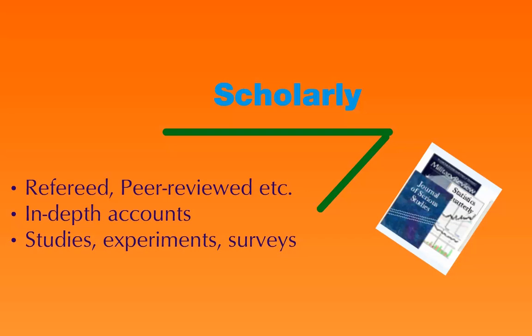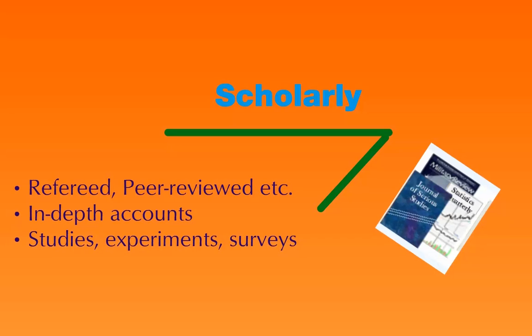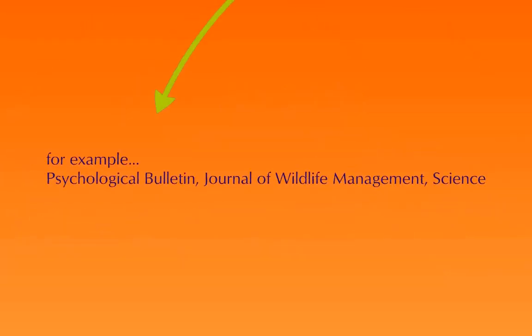That does happen. So this is the process referred to when someone says peer-reviewed. Your instructor might say they want scholarly sources for your paper, or they might say peer-reviewed — that's what a scholarly source is all about. For example, Psychological Bulletin, Journal of Wildlife Management, and Science are all different types of scholarly journals.